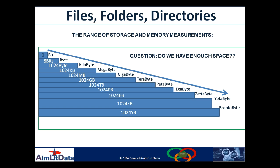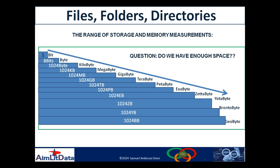It continues as the sizes grow, and that is the evolution of the size of memory and hard disk storage. The process will continue until we get to the much bigger geobyte, which does not yet exist. You use the same procedure to reach it — for example, you multiply 1024 times brontobytes in order to get geobyte.